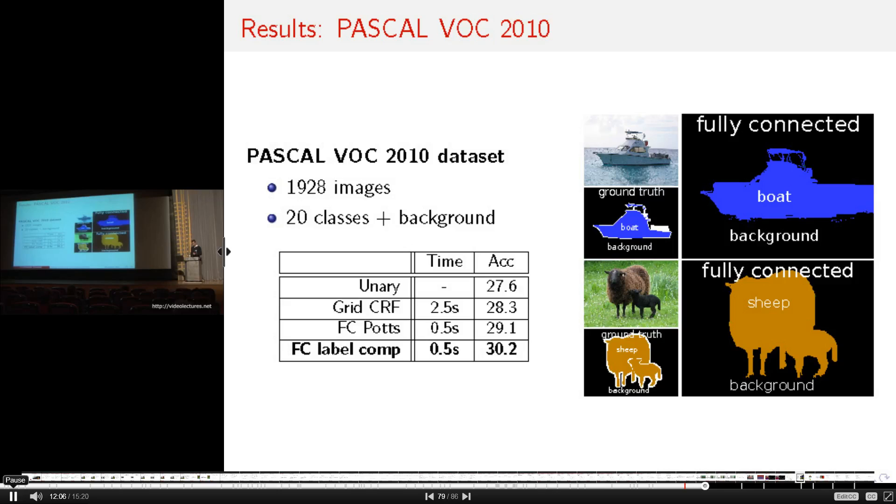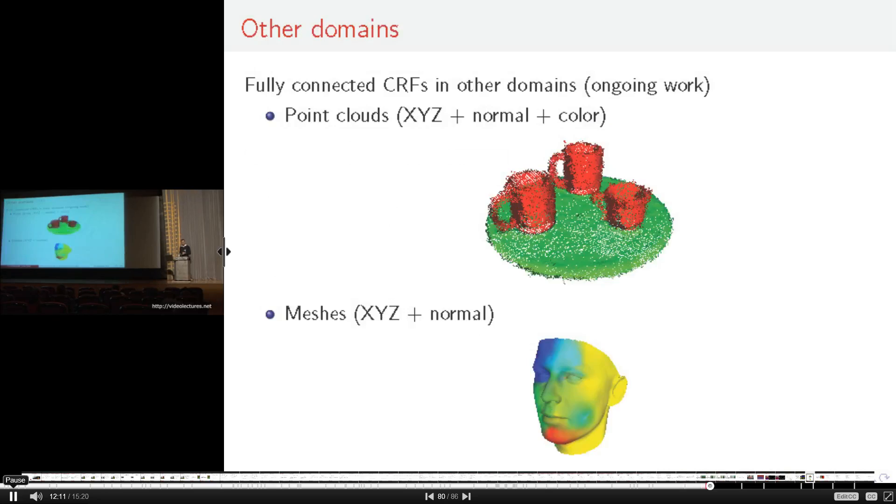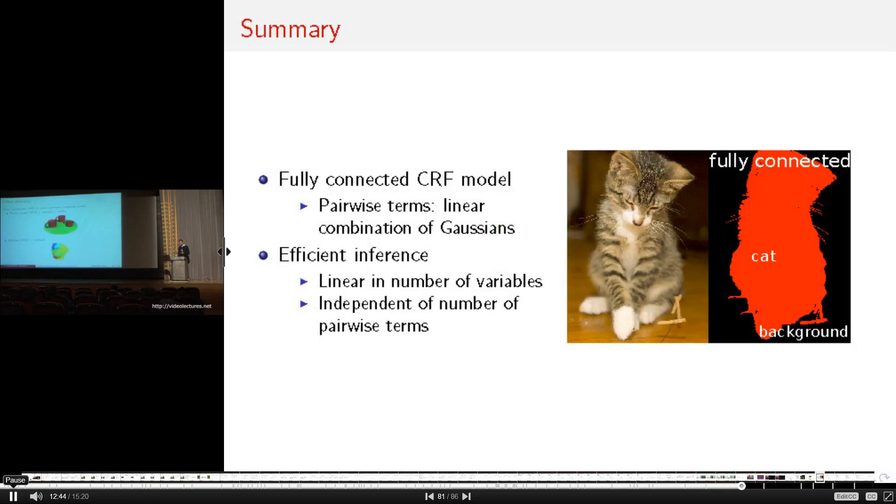So far, I've only talked about fully connected CRFs in terms of images, but there's nothing restricting neither the mean field approximation nor the filtering to simple images. The only restriction the filtering implies on our algorithm is that we need to use Euclidean feature space. We can, for example, use the fully connected CRF to segment point clouds, where we use the XYZ position, normal, and color of every point as a feature. Or we can use it to segment meshes, where the XYZ position, normal of every vertex is used.